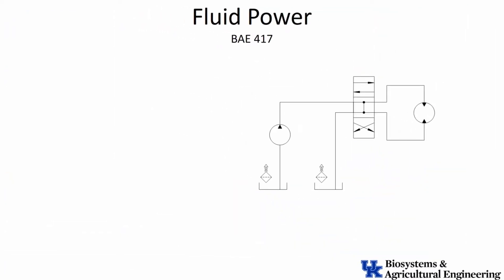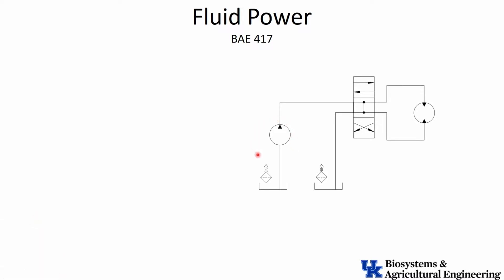Let's take a closer look at this diagram of a simple, typical fluid power system. We have a number of components. Starting from the bottom, we have a reservoir — a supply of fluid. That fluid moves from the reservoir through a pump. What the pump is doing is taking rotational mechanical energy — a rotating shaft from an engine or electric motor — and imparting that energy into the fluid.